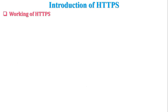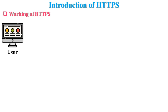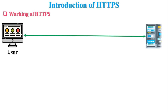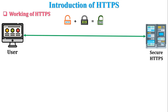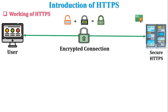Let's take a scenario to understand how HTTPS works. A user wants to communicate with a web server that uses HTTPS. The combination of HTTP and an SSL certificate is called an HTTPS connection. SSL stands for Secure Socket Layer. When the server uses HTTPS, the connection is encrypted, meaning all data transferred between user and server is in encrypted form.